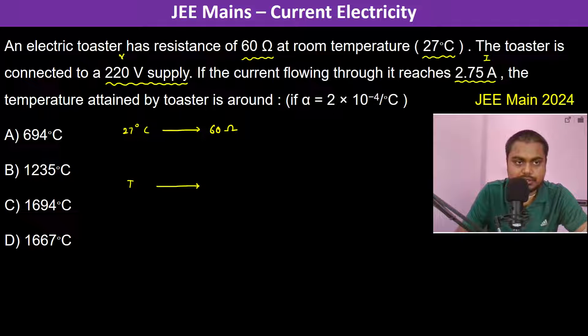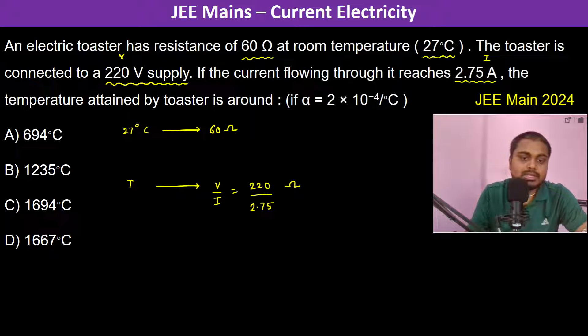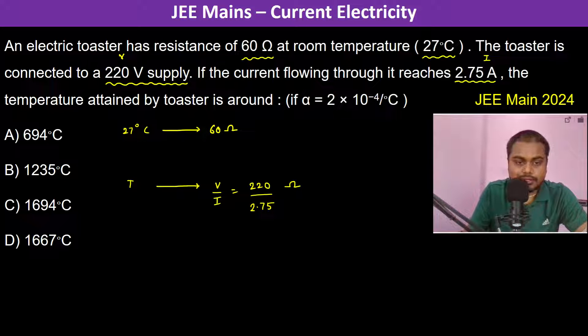And this is the voltage, so the resistance is going to be V by I, which is 220 divided by 2.75 ohms. The temperature attained by the toaster is around... So we can write here that 220 divided by 2.75...